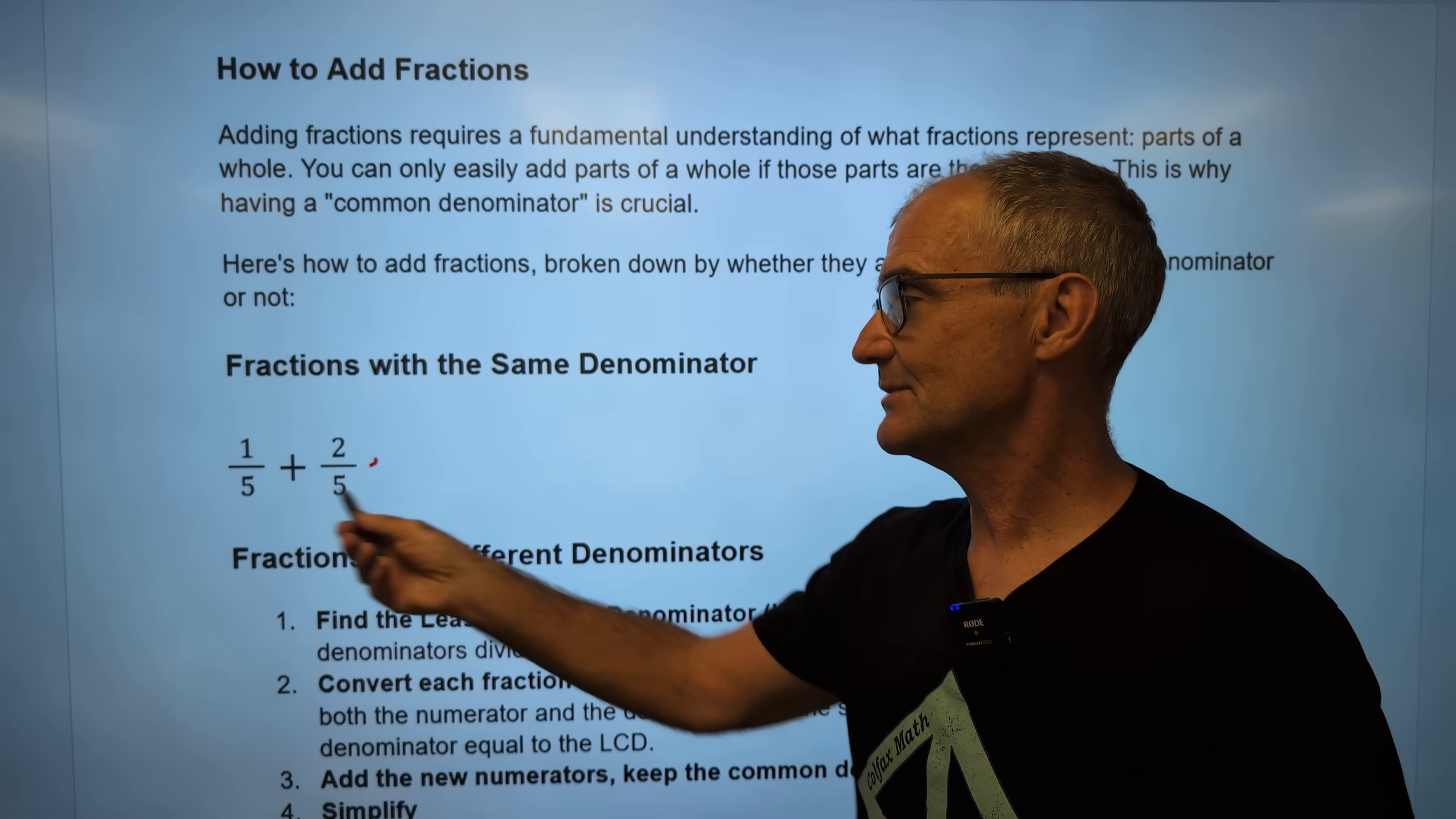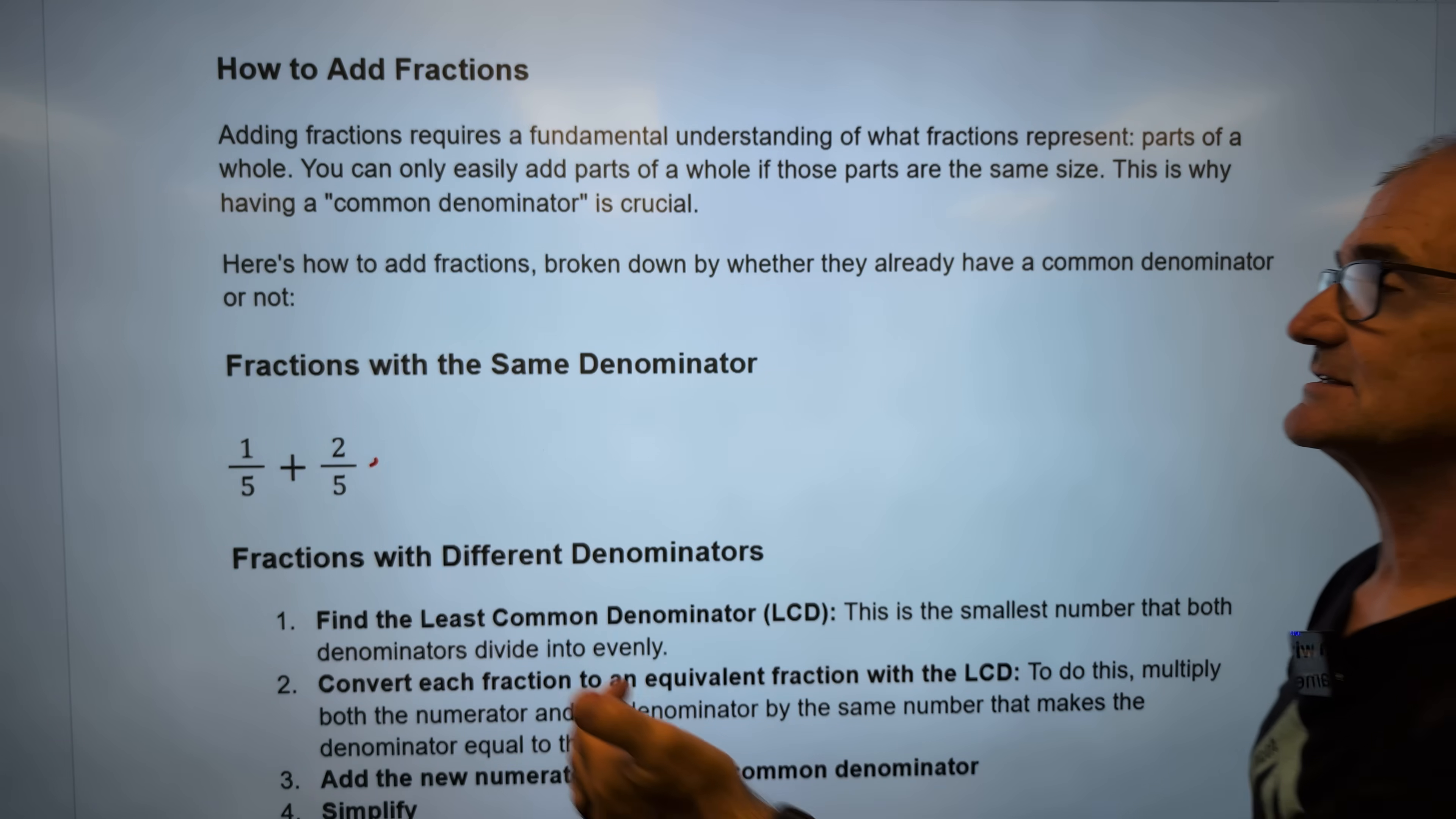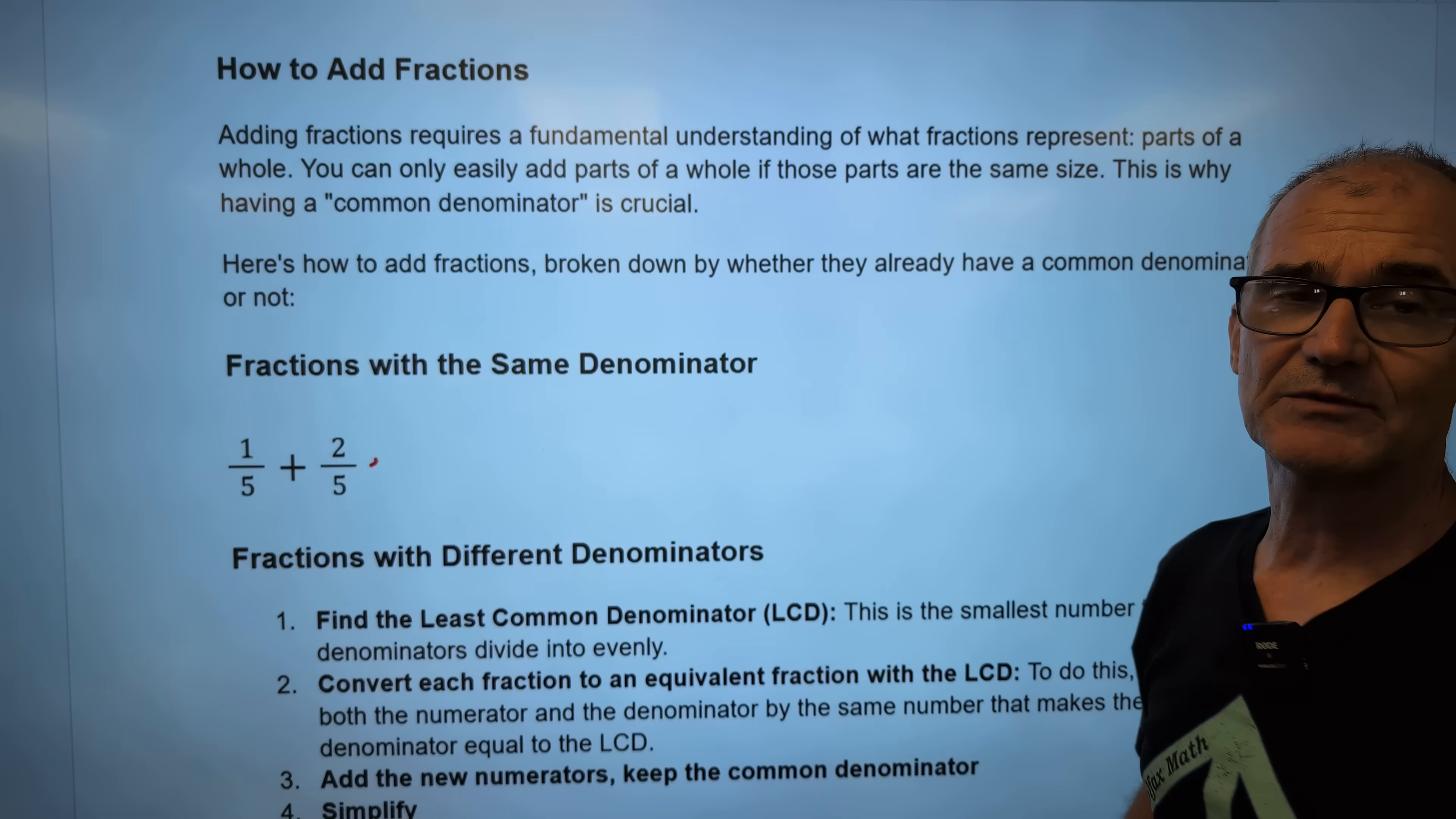If they have the same number in the bottom, that's called a denominator, then it's really easy to add. You just add across the top, keep the bottom the same.